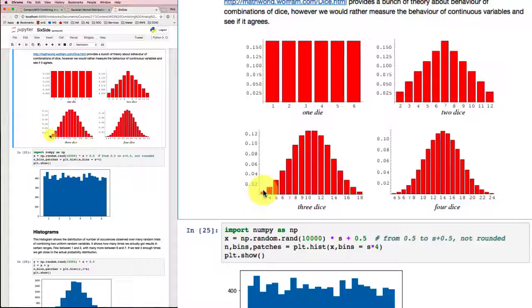If you roll three dice, it starts to look a little more curvy. And if you roll four dice, that's starting to look an awful lot like a Gaussian distribution. So combining random variables, even if they're uniformly distributed random variables, seems to be giving us something that looks like a Gaussian.